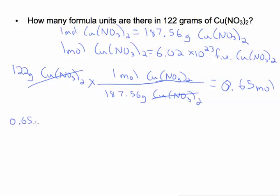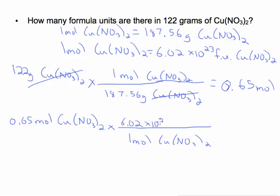So for the next step, we're going to go from moles to formula units. Because we're trying to cancel out moles, we'll put one mole on the bottom and Avogadro's number on top. And then we'll multiply. And you should get 3.91576 times 10 to the 23rd.